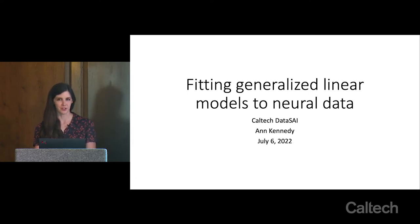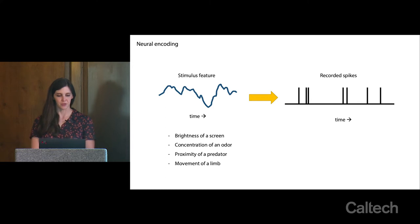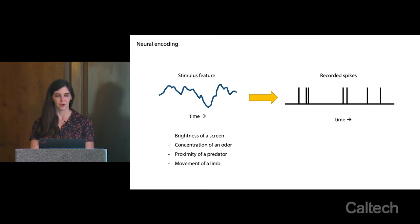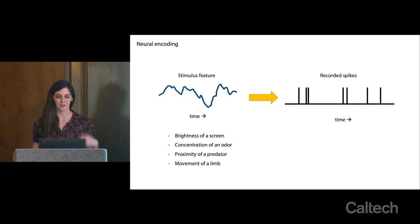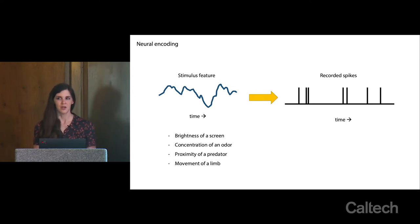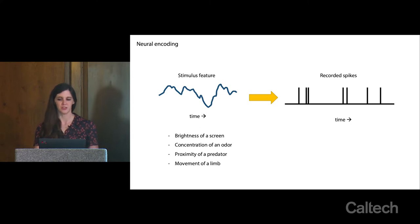Before we get to the notebooks, I wanted to talk about some background on generalized linear models — what they do and how they work. We'll pick up from before lunch: we have a stimulus feature and we have recorded spikes, and we want to say, without thinking too much about how it's happening in the brain, how you go from one to the other. A GLM is an encoding model that tells you how a stimulus — brightness, odor concentration, movements, or behavioral annotations — could be used to predict the spiking of neurons.